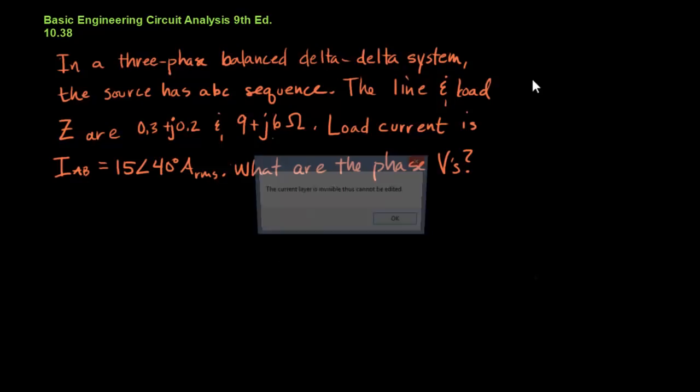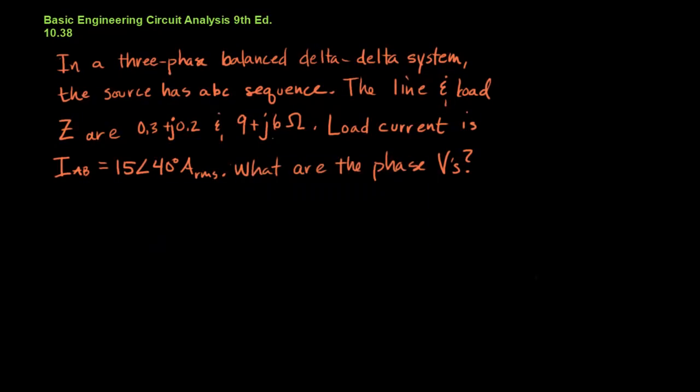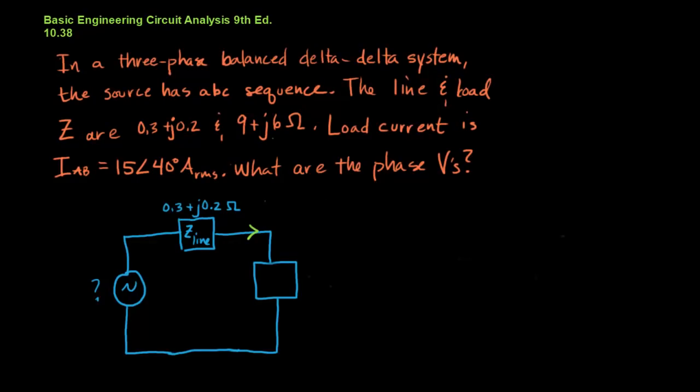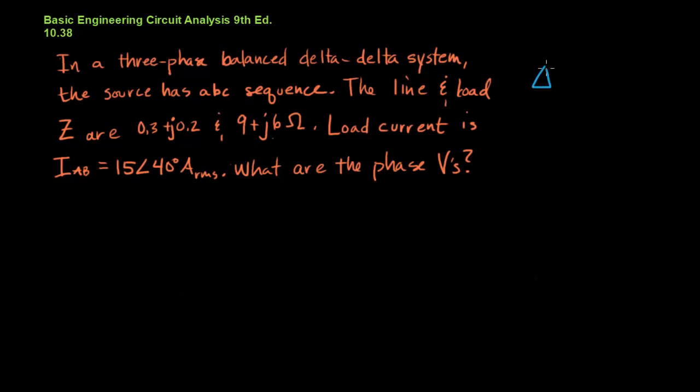That means we have what we don't want. We have something that looks like this. It's a really complicated circuit to solve. Four meshes. It's just a nightmare. We don't want to deal with it. So we're going to convert it into something more simple.